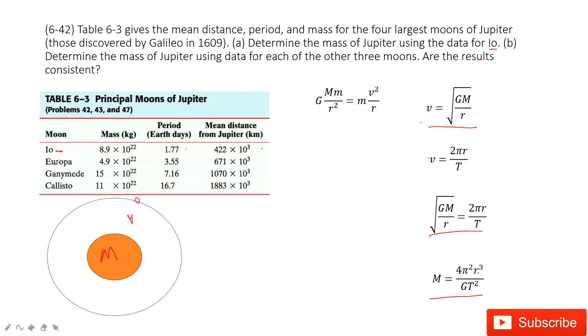So you can see you have another three moons. You still do the same thing, you can just input the corresponding period and distance and check whether this Jupiter's mass is the same or not.